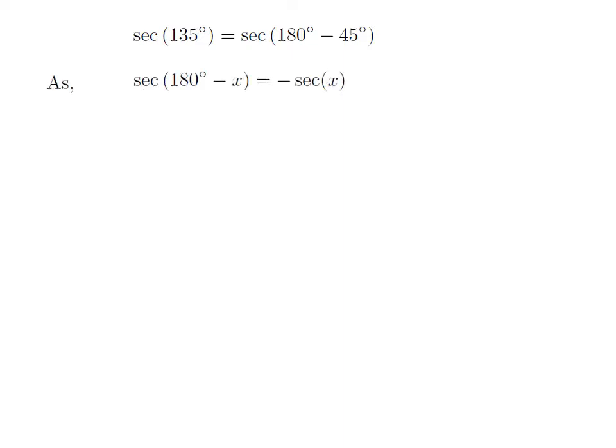As we know, the trigonometry identity secant of 180 degree minus x is equal to minus secant of x.